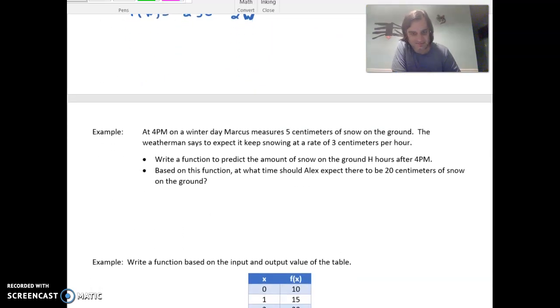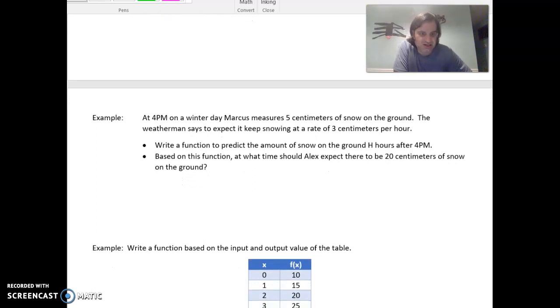Next example. At 4 PM on a winter day, Marcus measures 5 centimeters of snow on the ground. The weatherman says to expect it to keep snowing at a rate of 3 centimeters per hour. Quite a blizzard. Write a function to predict the amount of snow on the ground 8 hours after 4 PM.